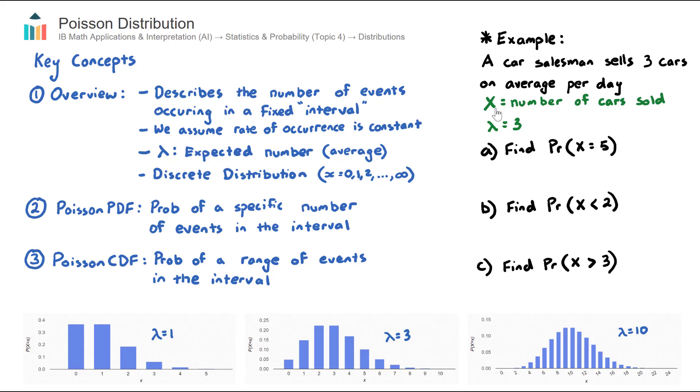In this case here, our discrete random variable, the thing that varies, is the number of cars that the salesman sells, and it's discrete, so whole numbers. So our capital X here is number of cars sold per day. And our lambda, our expected result, our average, is three.